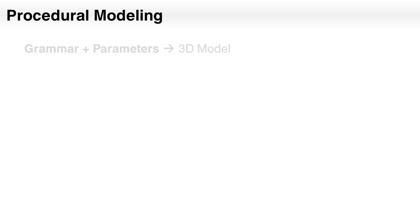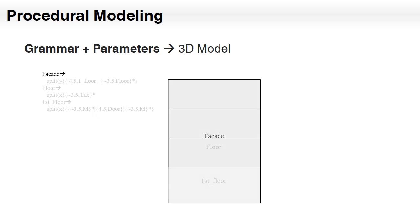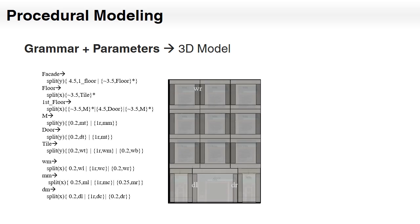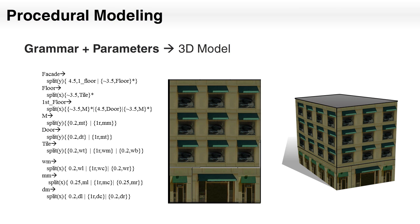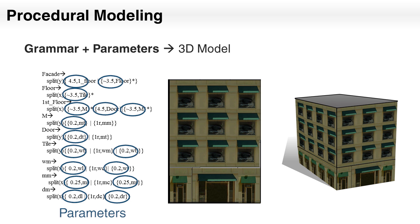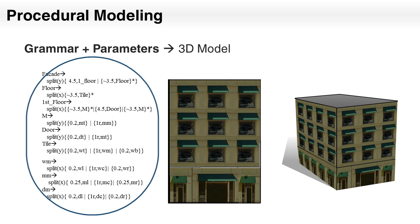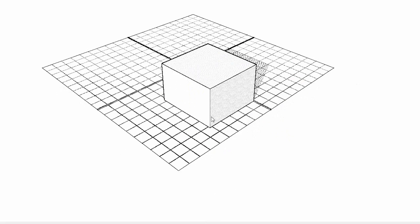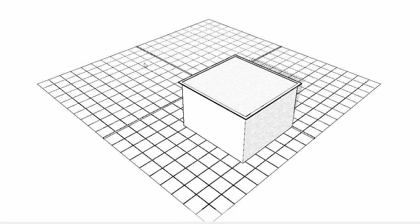Normally, in procedural modeling, a grammar and set of parameters are used to generate a 3D model. It has the advantage of detailed amplification — few lines of code can generate numerous examples. However, the parameters are hard to control and the complete grammars are tedious and complex to write.